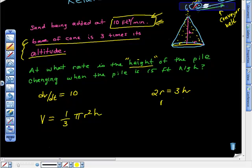Again, I'm going to solve for r because I'm interested in h, so I want r in terms of h. Divide both sides by two and get r equals three-halves h.